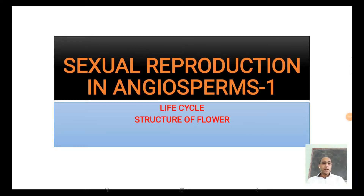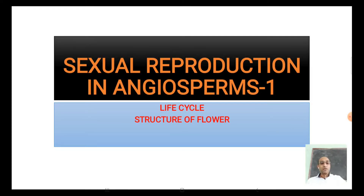Welcome to our online botany classes. Today we will discuss sexual reproduction in angiosperms. In the previous videos, I explained asexual reproduction and sexual reproduction in general. Today we will discuss how sexual reproduction takes place in angiosperm plants. This will be a preliminary video on the structure of flower and the entire life cycle of an angiospermic plant, and in the following videos I will explain the various events that occur in sexual reproduction in angiospermic plants.